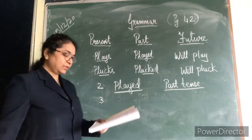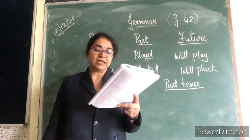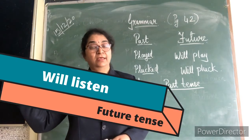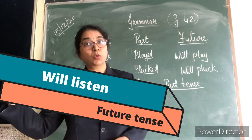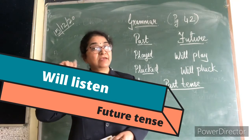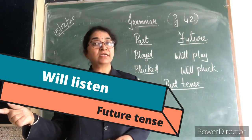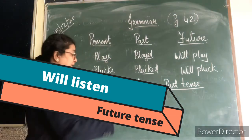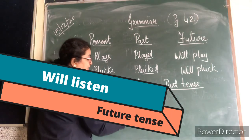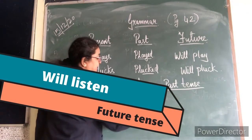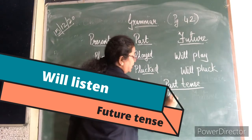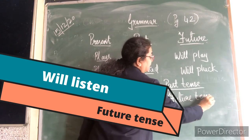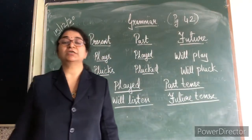Third: They will listen to Jyoti and Hema. Will listen — they are going to listen, aage hone wala hai. What tense is it? It is future. So first underline will listen — that is future tense.